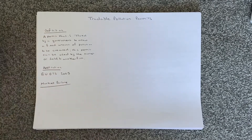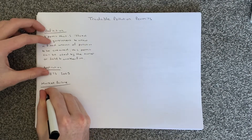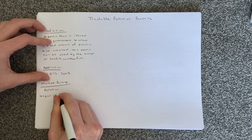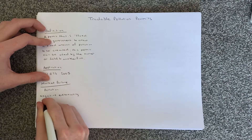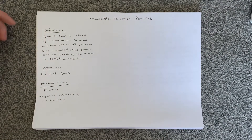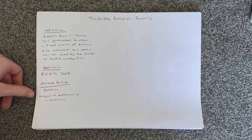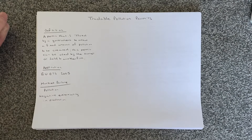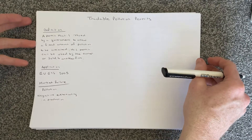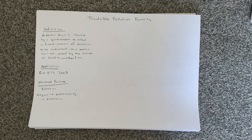Tradable pollution permits are used to correct pollution, and pollution is an example of a negative externality in production. If we had an essay question on tradable pollution permits, we would start off by outlining that pollution is an example of a negative externality in production, explain why that leads to a market failure, and then introduce the tradable pollution permit scheme and how it would correct the market failure.